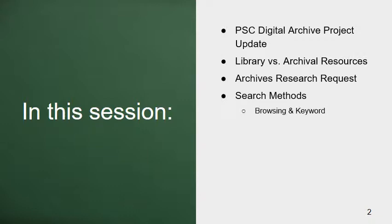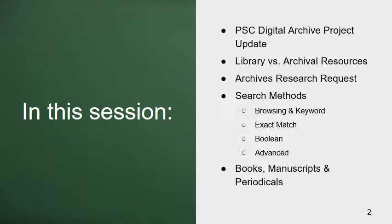I'll also tell you about the differences between library and archival collections, and we'll use a recent archives request as an exercise to learn how you can use the PSC Digital Archives to discover primary source materials using several different search methods. We'll go over browsing, keyword search, and advanced search. And finally, we'll discuss how you can use some of the book, manuscript, and periodical collections in the archives to find information related to the history of the college, alumni, and faculty.